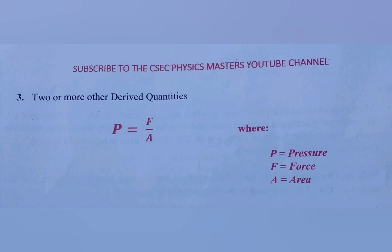Example three highlights the production of a derived quantity from two other derived quantities. In this case pressure is equal to force over area. Pressure is a derived quantity. Force is a derived quantity. And area is also a derived quantity. And force is divided by area to give you another derived quantity. In this case it is pressure.